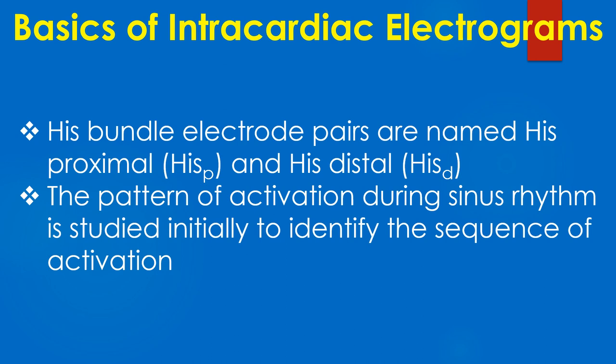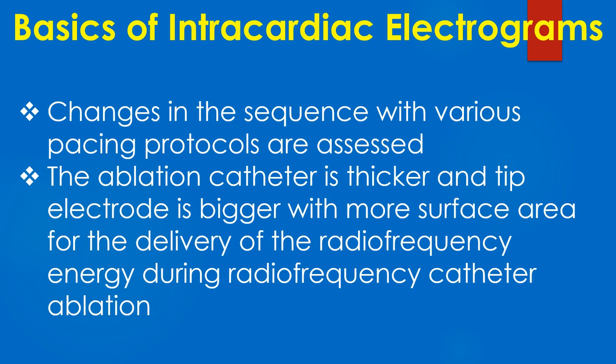His bundle electrode pairs are named His proximal and His distal. The pattern of activation during sinus rhythm is studied initially to identify the sequence of activation. Changes in the sequence with various pacing protocols are assessed later. The right ventricular catheter is also used for pacing protocols while inducing tachycardia. The ablation catheter is thicker and the tip electrode is bigger with more surface area for the delivery of radiofrequency energy during radiofrequency catheter ablation.